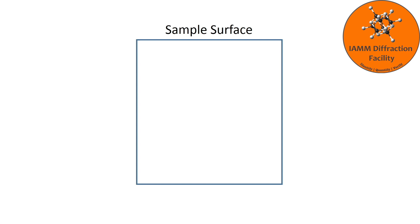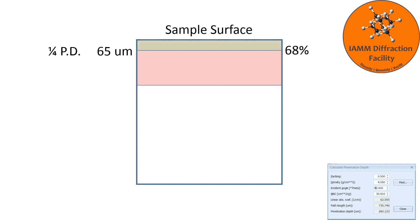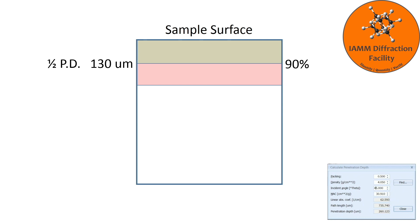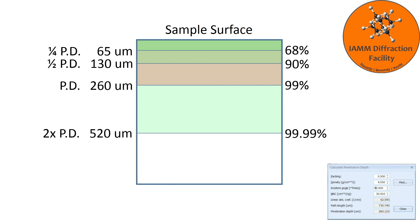Please be aware that the penetration depth does not mean that the diffraction pattern contains information only from that depth. What we see here is that 99% of the information in our diffraction pattern comes from the volume of material that spans the surface of the sample down to the penetration depth shown in the MAC calculator — or 260 microns for our example at 90 degrees 2-theta. 68% comes from the top one-fourth of the penetration depth. 90% comes from the top one-half of the penetration depth. 99.99% comes from the thickness spanning the surface down to double the penetration depth. This means that x-rays are penetrating deeper than the calculated penetration depth, but only approximately 1% of the information recorded in the diffraction pattern originates from the volume spanning 260 to 520 microns in our example.